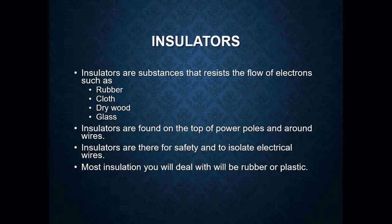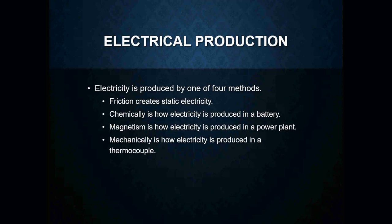Insulators are there for safety, and they're there to isolate electrical wires. Most insulation you will deal with is going to be either a rubber or a plastic coating. Electrical production usually occurs in one of four ways. We have friction, which creates static electricity. We have chemical reaction, which is done through a battery — a 9-volt battery, a D-sized battery, a C-sized battery. We do it through magnetism, which is how electricity is produced in a power plant.